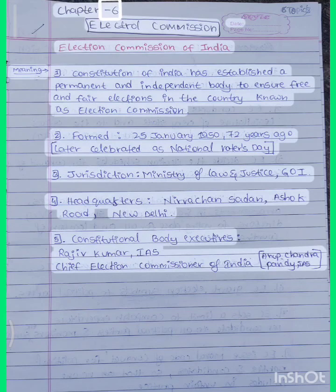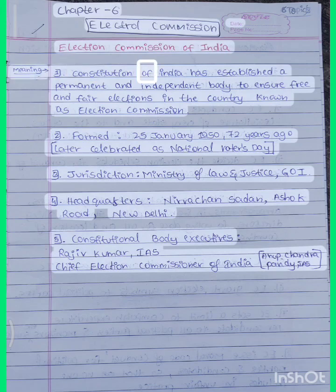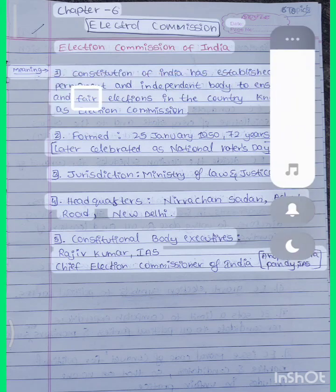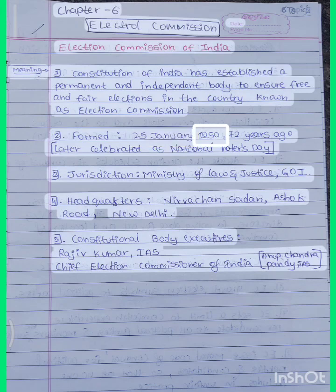Chapter 6: Election Commission of India. Meaning: The Constitution of India has established a permanent and independent body to ensure free and fair elections in the country, known as the Election Commission. It was formed on the 25th of January 1950, later celebrated as National Voters' Day.